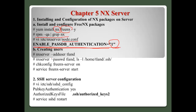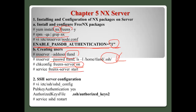On the server side, use 'nxserver --adduser tland', then 'nxserver --passwd tland'. After creating this user, check the directory /home/tland/.ssh - here you will find the SSH key. Then use 'chkconfig freenx-server on' to register to each run level, and start the NX server with 'service freenx-server start'.